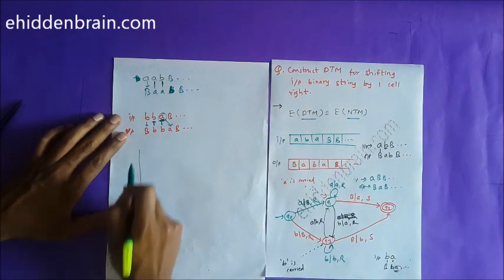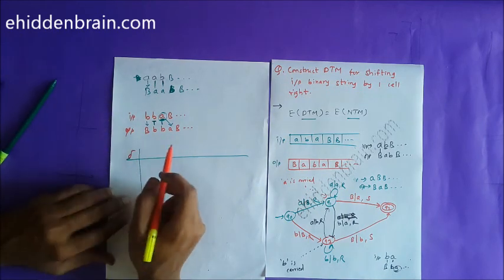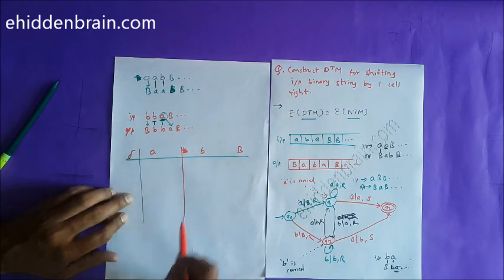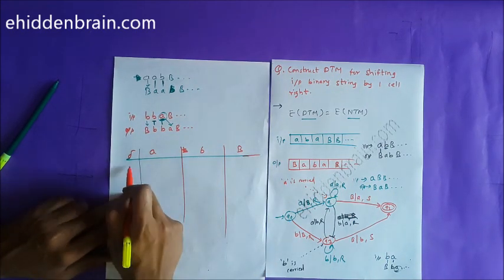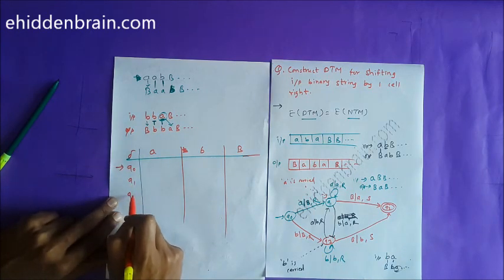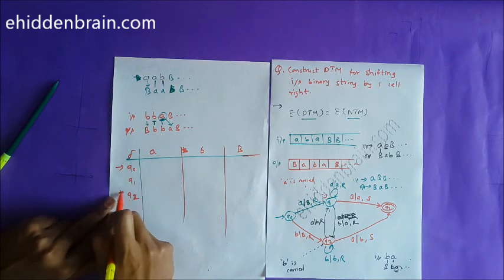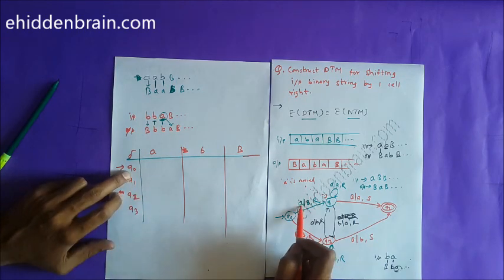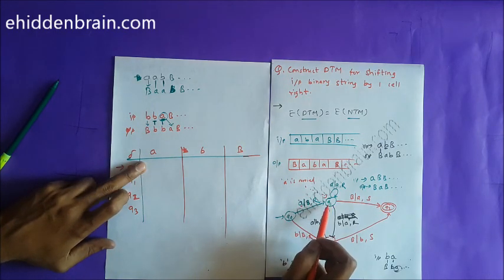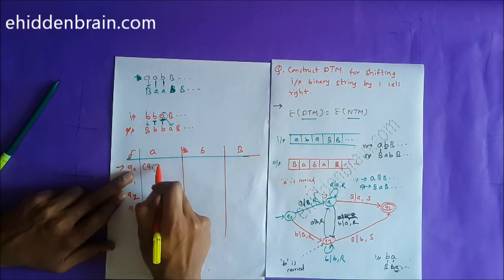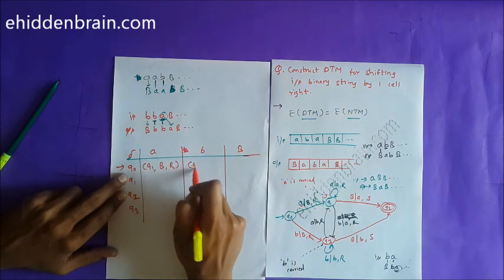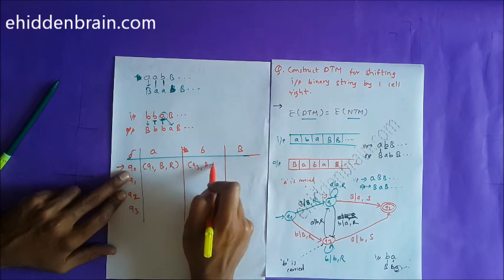Now I will show the transition table. The transition function delta has input alphabets 'a', 'b', and blank (B). States are q0, q1, q2, q3, where q0 is the start state and q2 is the final state. On q0 with 'a': go to q1, write blank (B), move right. On q0 with 'b': go to q3, write blank (B), move right. On q0 with blank (B): no transition (dash).